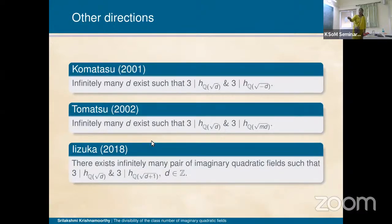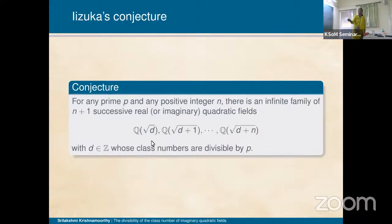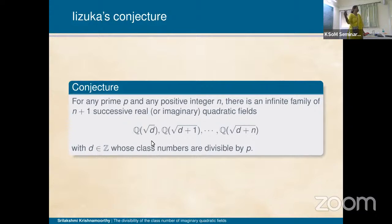Based on the result that 3 divides the class numbers of both consecutive fields, Iizuka made a conjecture. For any prime P and odd positive integer, there is an infinite family of successive real or imaginary quadratic fields such that the class numbers are divisible by P. A generalized version of Iizuka's conjecture replaces the prime P with any natural number K, asking whether there exist consecutive quadratic fields such that K divides the class number of all these fields.